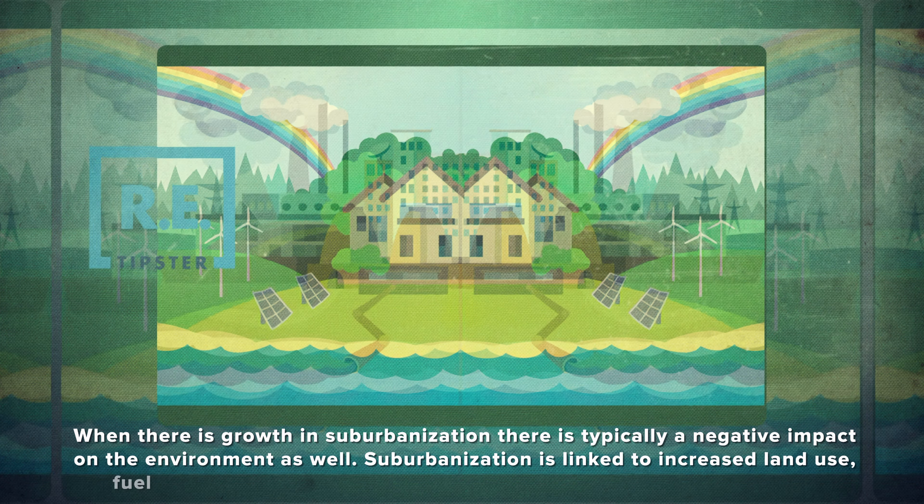Suburbanization is usually seen through the lens of residential development, but it affects the industrial world as well. While industrial developments used to be situated in the urban core of many cities, a lot of companies are looking to build facilities and plants in less populated areas to take advantage of the availability of parking space and newer buildings, and also to provide opportunities for employees to work in less congested areas.